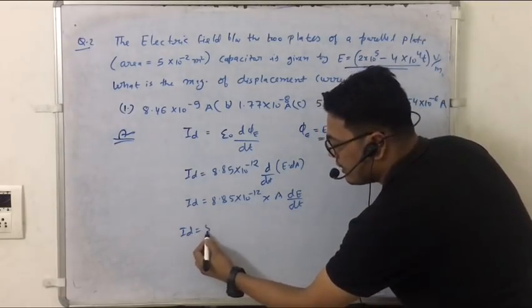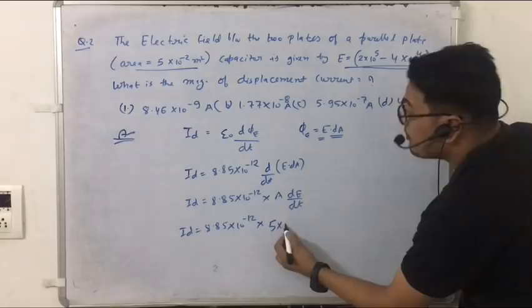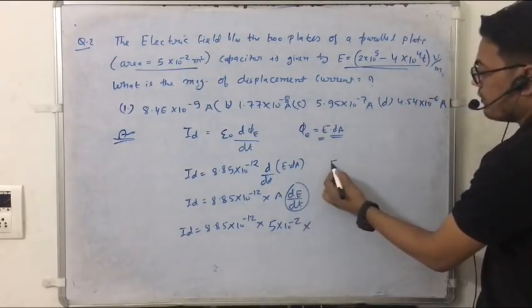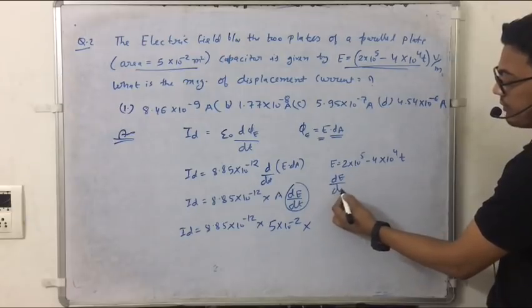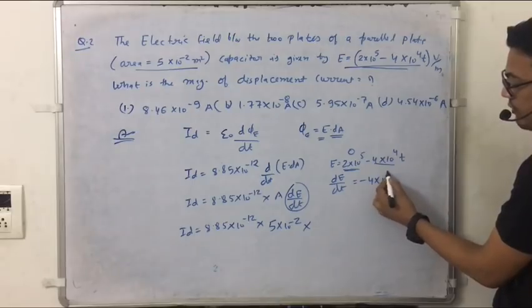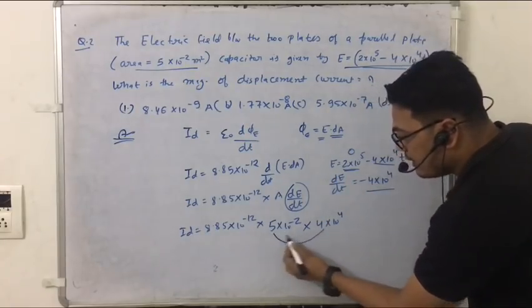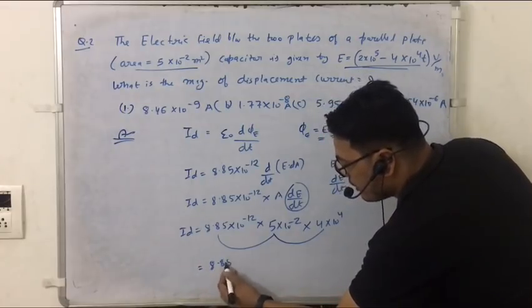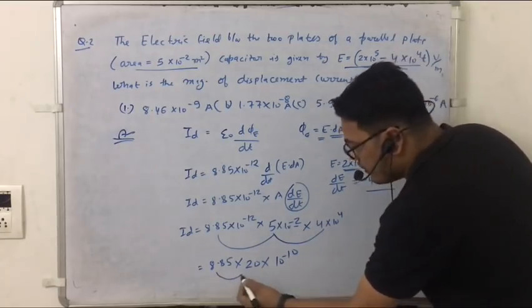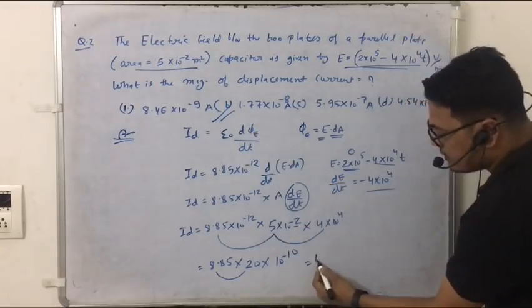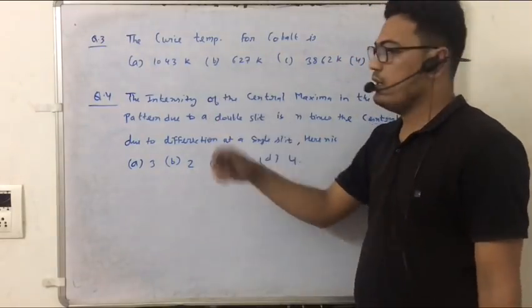So Id equal to epsilon naught, value of epsilon naught 8.85 into 10 to the power minus 12, dE by dt. Look, E which is given is 2 into 10 to the power 5 minus 4 into 10 to the power 4t. So this differentiation is dE by dt. So this portion is 0. This is minus 4 into 10 to the power 4. 20 multiply 8.85, so 8.85 into 20 and 10 to the power minus 14, minus 10. After when you multiply, you will get answer 1.77 into 10 to the power minus 8.